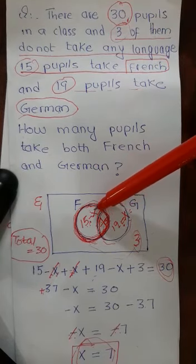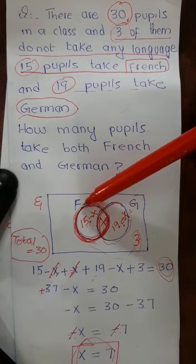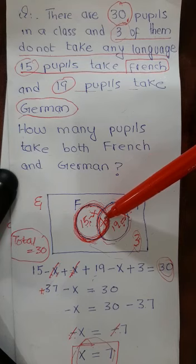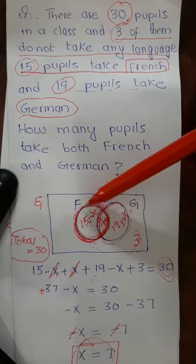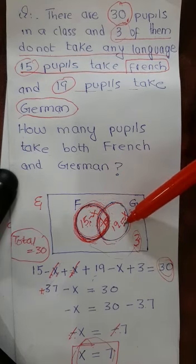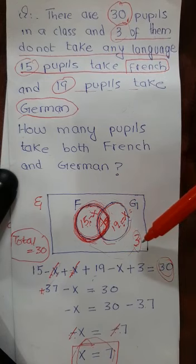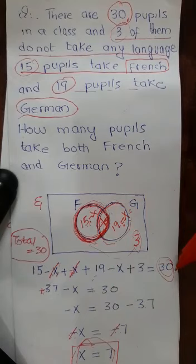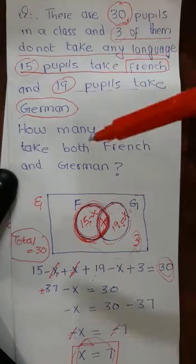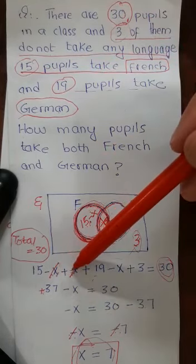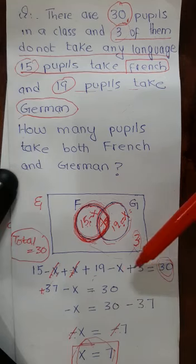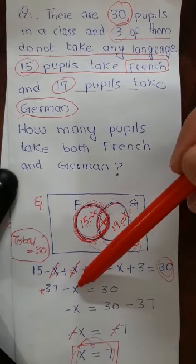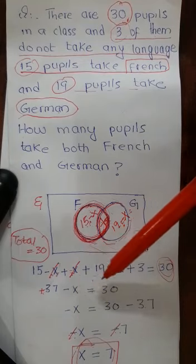Adding them up: (15 minus X), the students studying only French, plus X, the students studying both French and German, plus (19 minus X), the students studying only German, plus 3, the students studying neither French nor German — all of this equals 30. The minus X and plus X cancel out. So 15 plus 19 plus 3 equals 37, and 37 minus X equals 30.